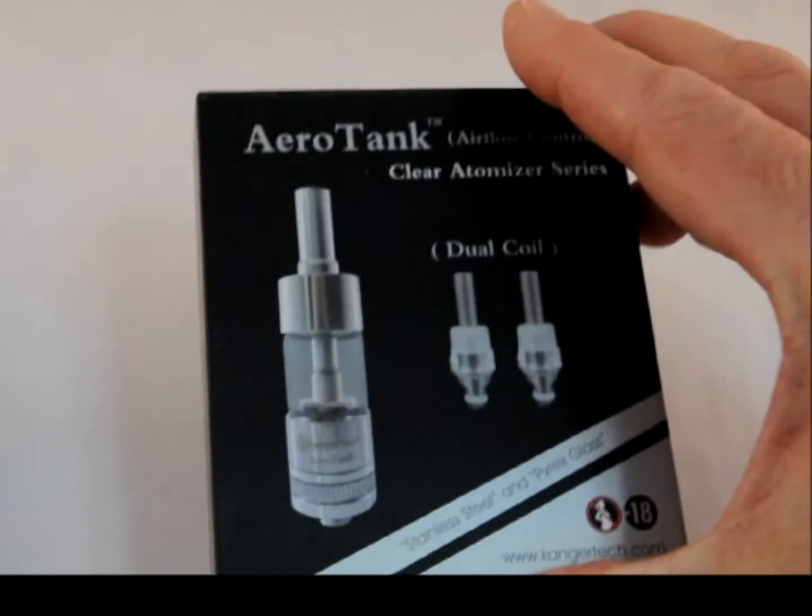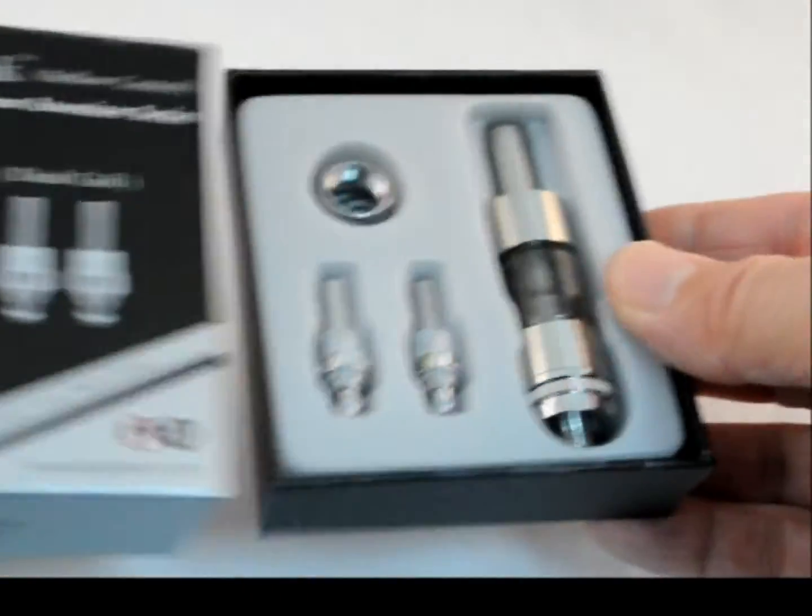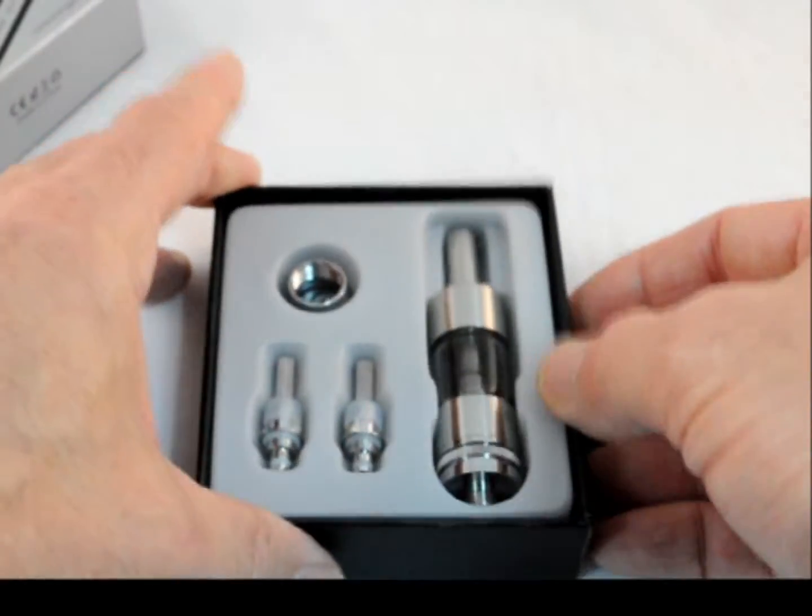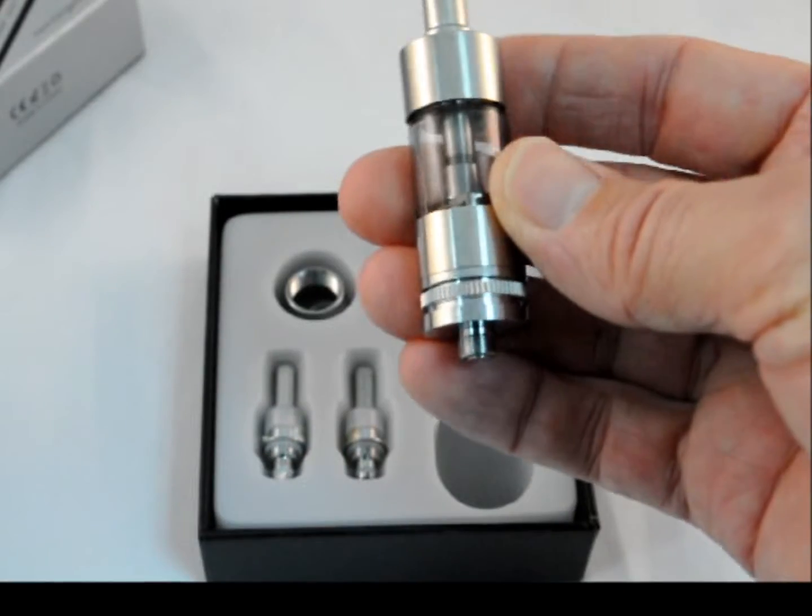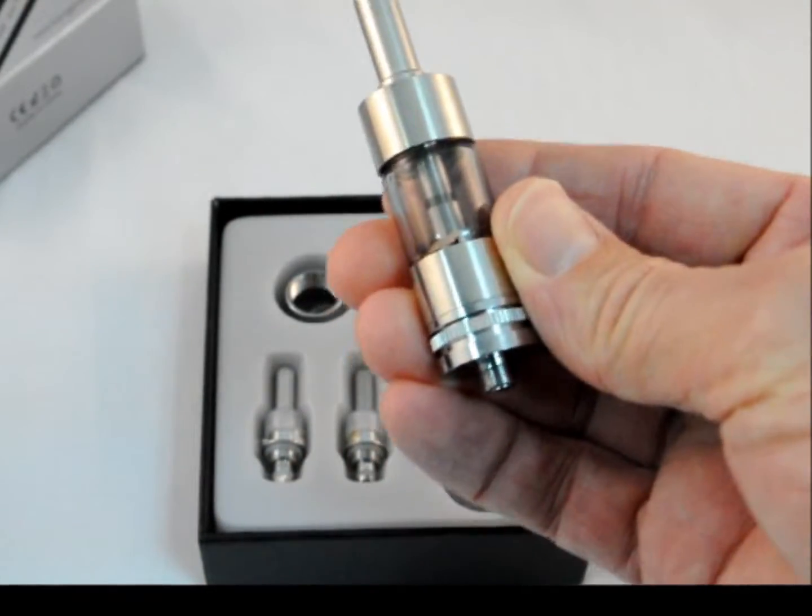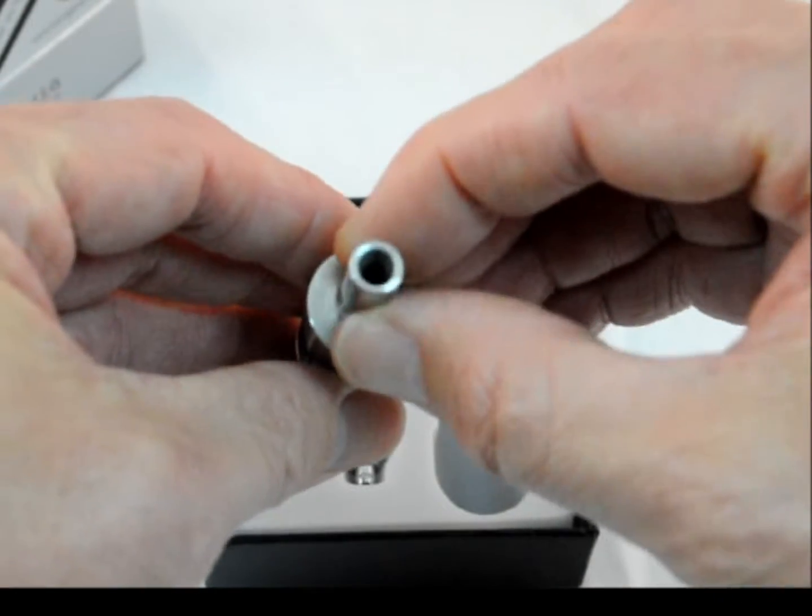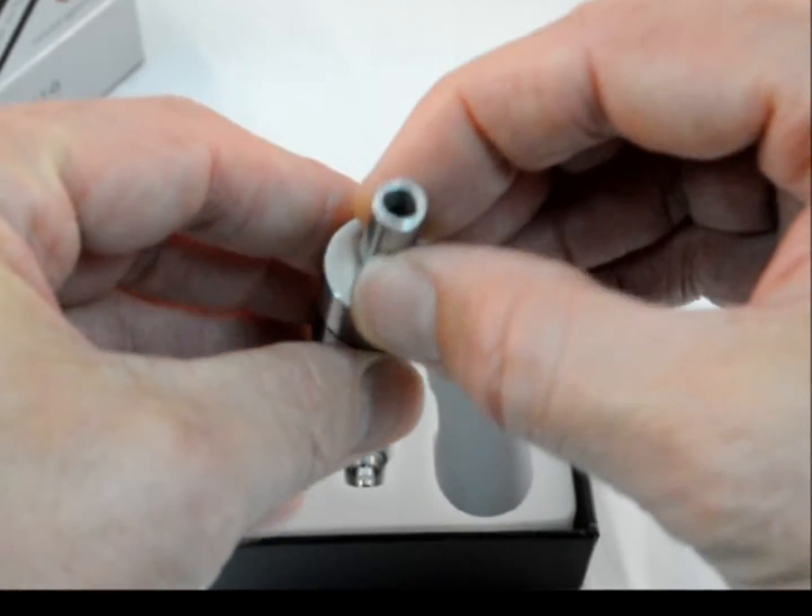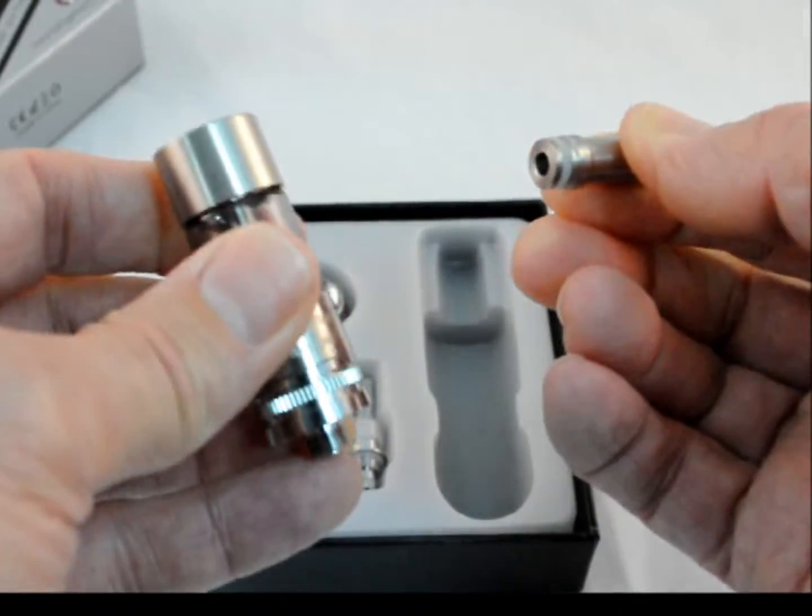Now let's take a look at the Aerotank by Kanger. The Aerotank has quite a bit of a different design. More of a brushed stainless steel look. The drip tip is quite a bit different. Much wider air flow. And it is replaceable.